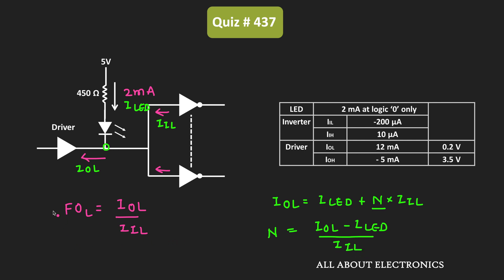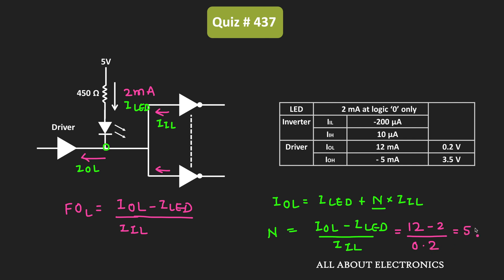So we can say that now the low-state fanout is equal to IOL minus ILED divided by IIL. So here, the value of the IOL for the driver is equal to 12mA, while the LED current is equal to 2mA. And here, the value of the IIL for each inverter is equal to 200μA, or 0.2mA. So from this, if we find the value of N or the low-state fanout, then that is equal to 50.